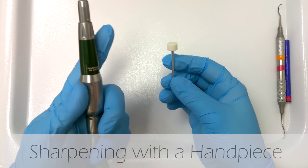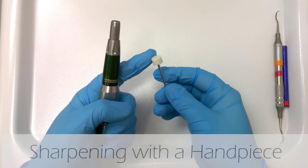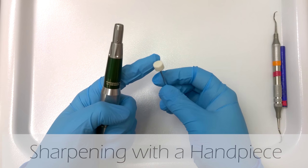I'm going to show you how to use a slow speed handpiece to sharpen your instrument. So this is a special attachment with a sharpening stone on it.